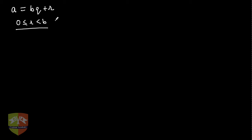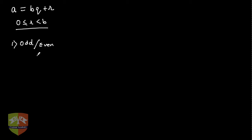This is a very good tool to express different types of integers, especially natural numbers. The first categorization is odd and even. We'll use division lemma to categorize natural numbers into odd and even numbers. If you take any number and divide by 2, that means the divisor b is 2.